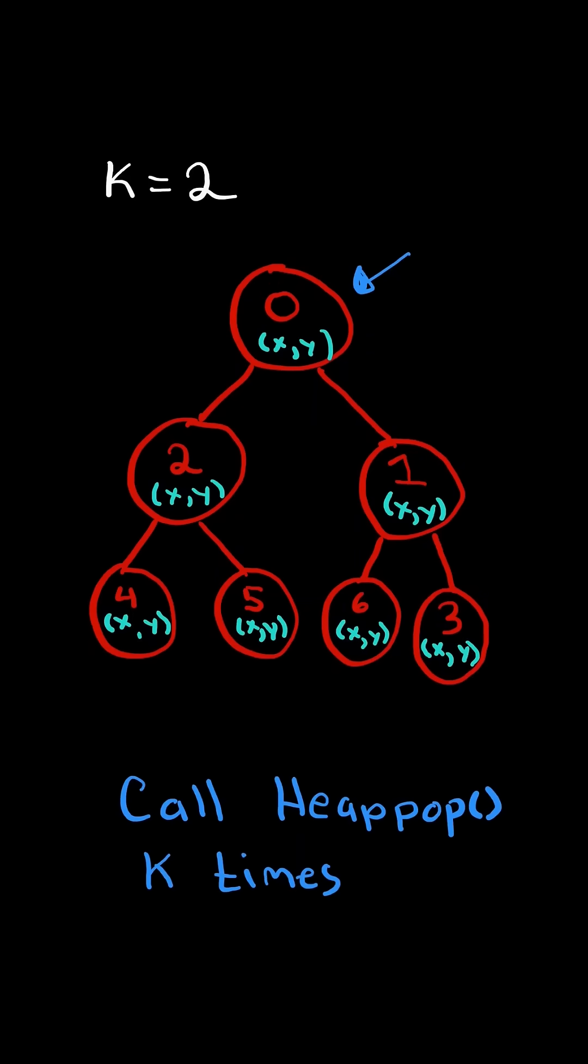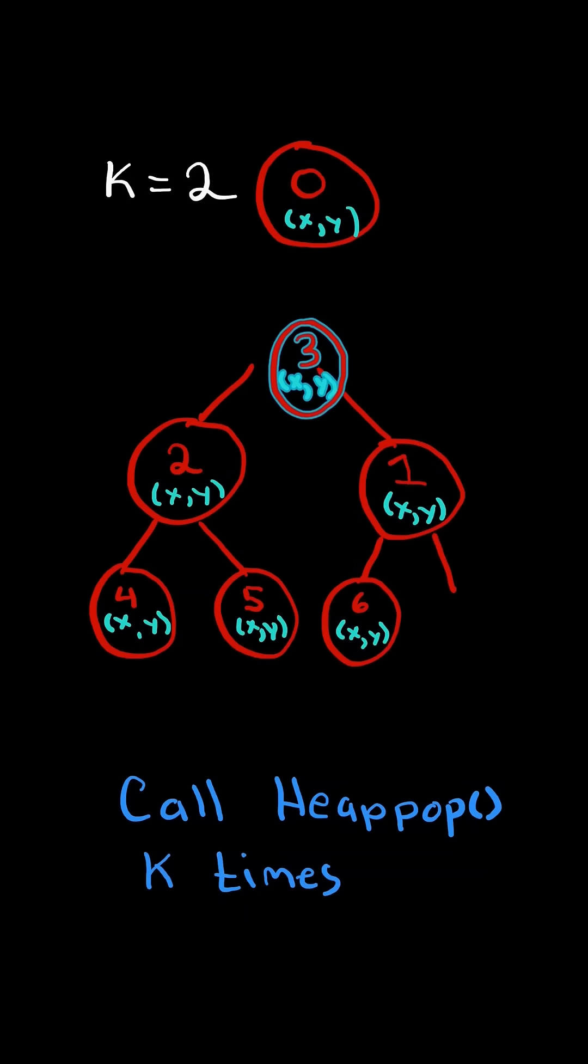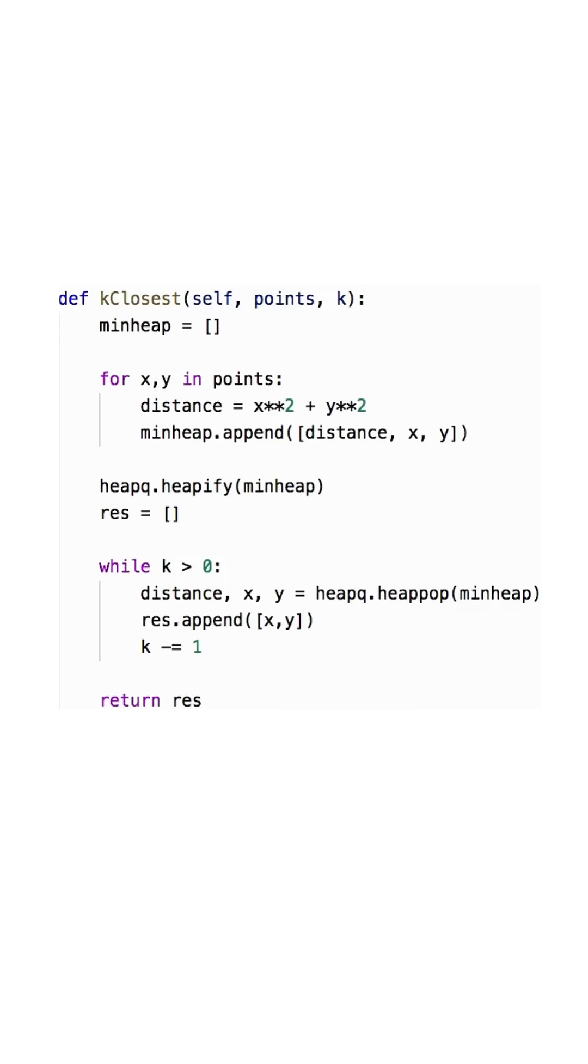The minimum is always at the root, so we can call heap pop to pop the element. Now the root gets replaced with the last element and we fix the min heap by swapping down with the smaller element. We can call heap pop again and return the k closest points to the origin. And here is the code to do so.